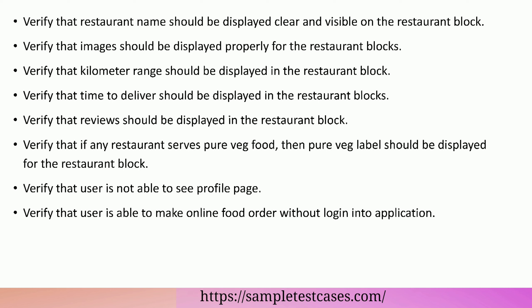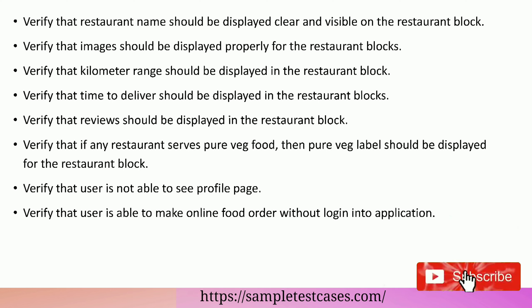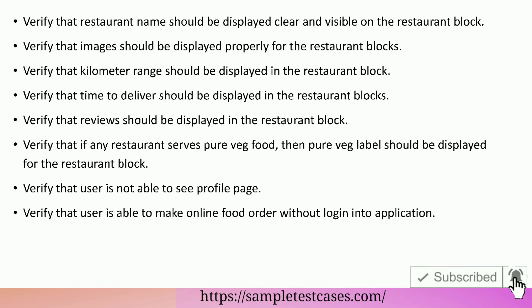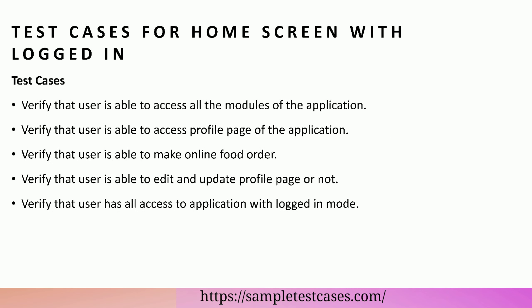Verify that reviews should be displayed in the restaurant block. Verify that if any restaurant serves pure veg food, then a pure veg label should be displayed for the restaurant block. Verify that the user is not able to see the profile page. Verify that the user is able to make an online food order without logging into the application.